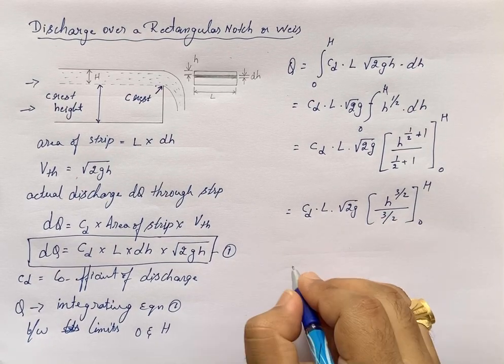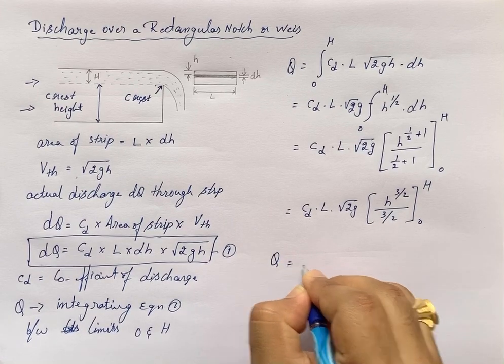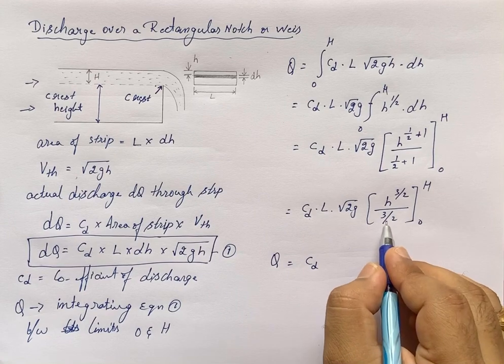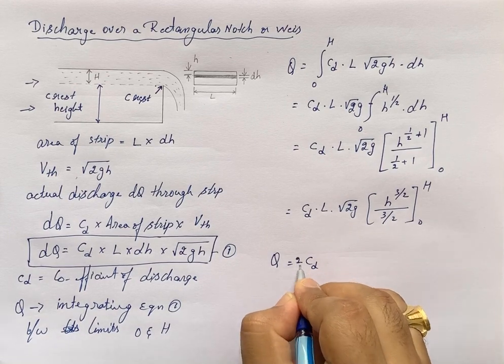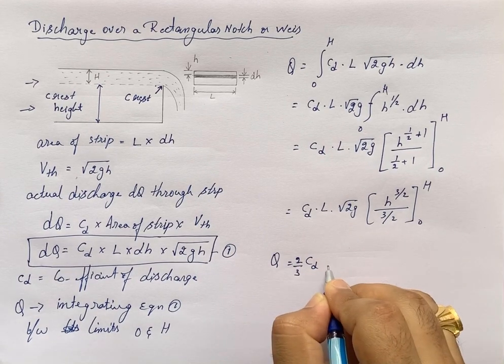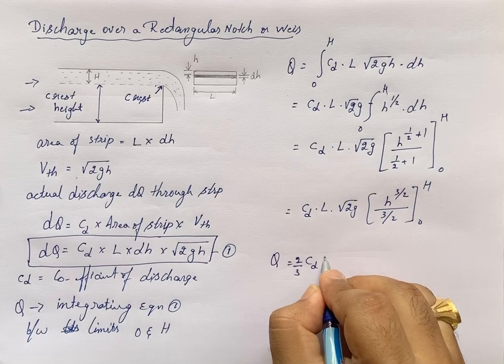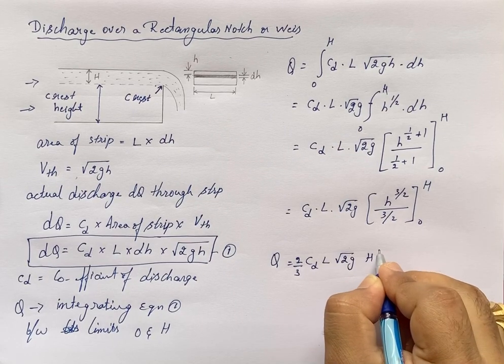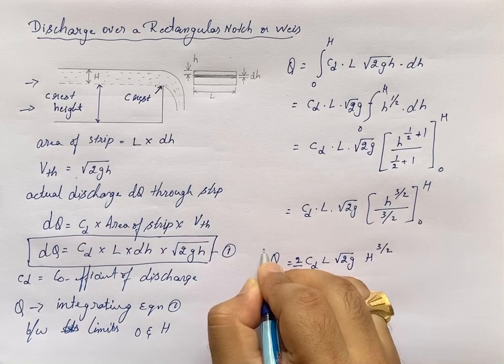When I apply the limits, Q becomes Cd times this 3/2, which I'll write as 2/3. Q = (2/3) × Cd × L × √(2g) × H^(3/2).